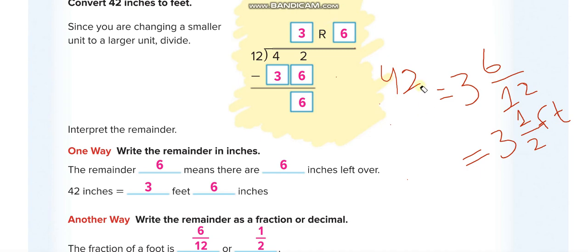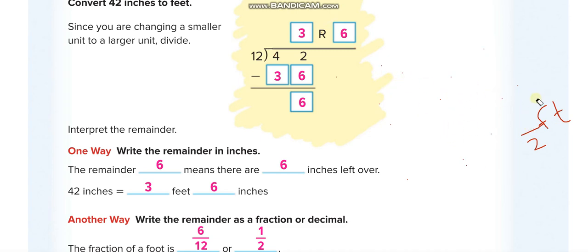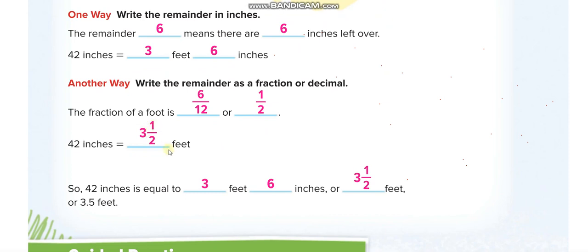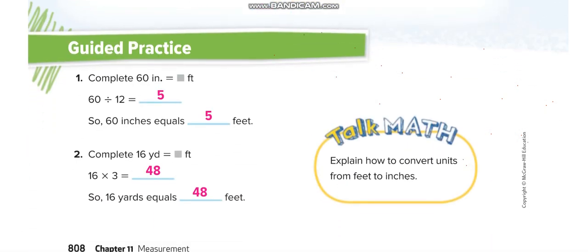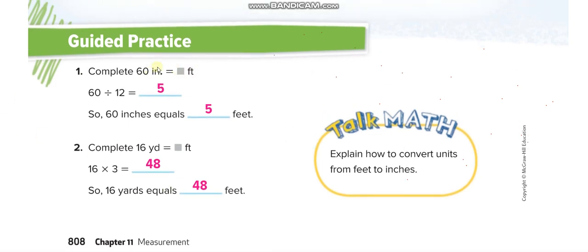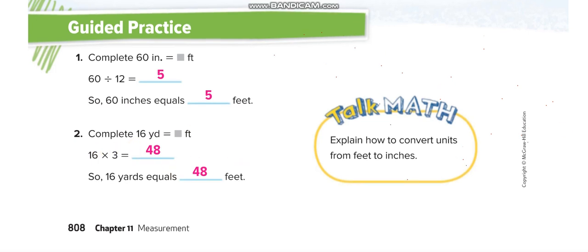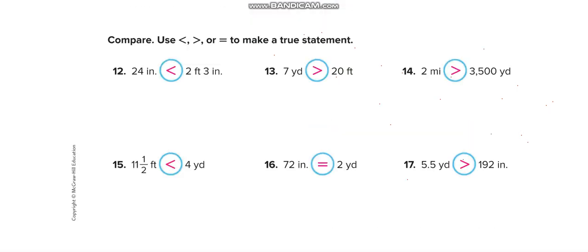Now for guided practice. The textbook confirms three feet six inches or three and a half feet — both are correct. First: 60 inches to feet — from smaller to larger, divide by 12 — gives five feet. Second: 16 yards to feet — from larger to smaller, multiply by three — gives 48 feet.